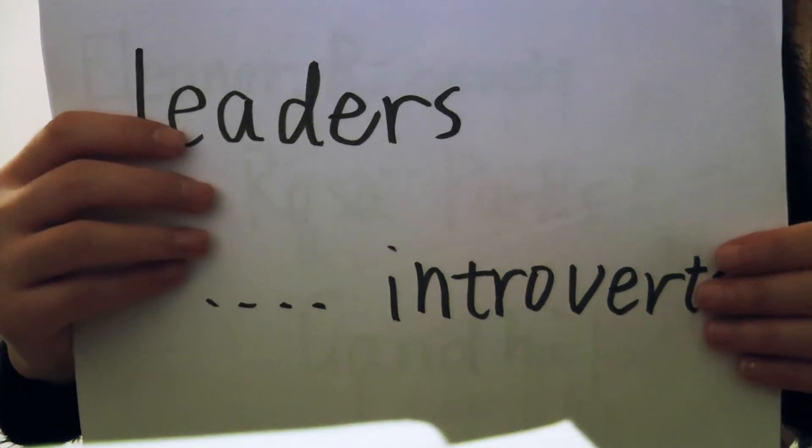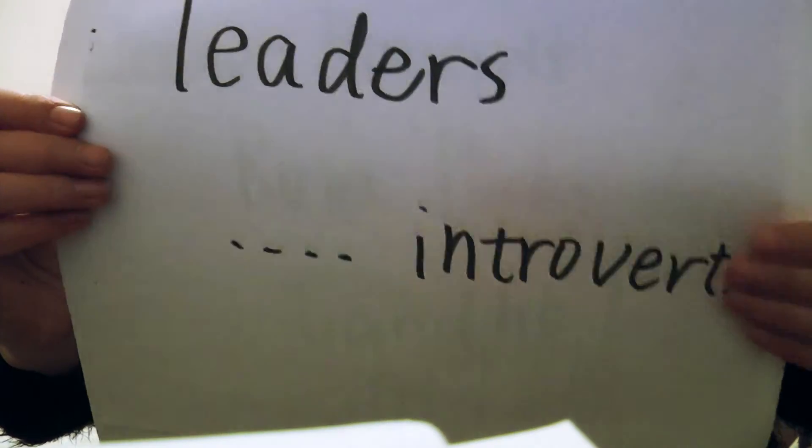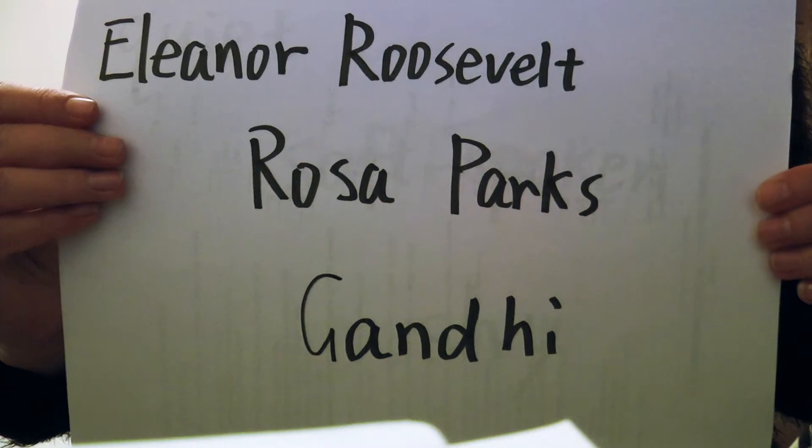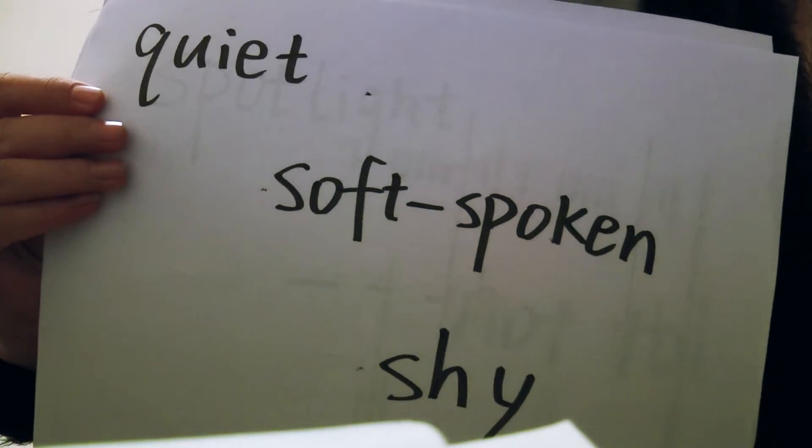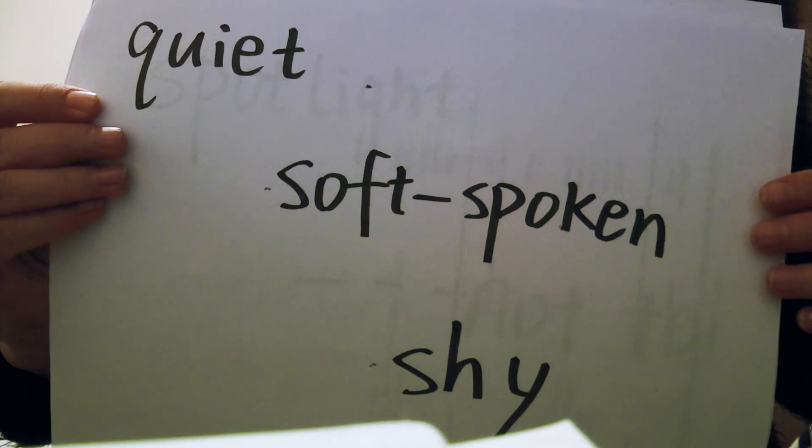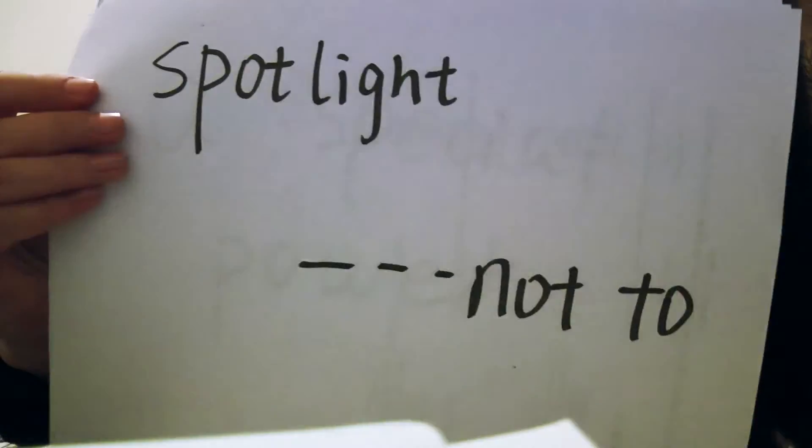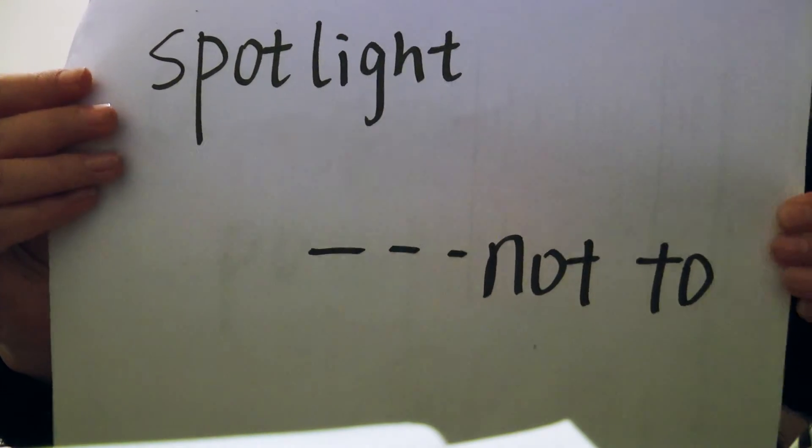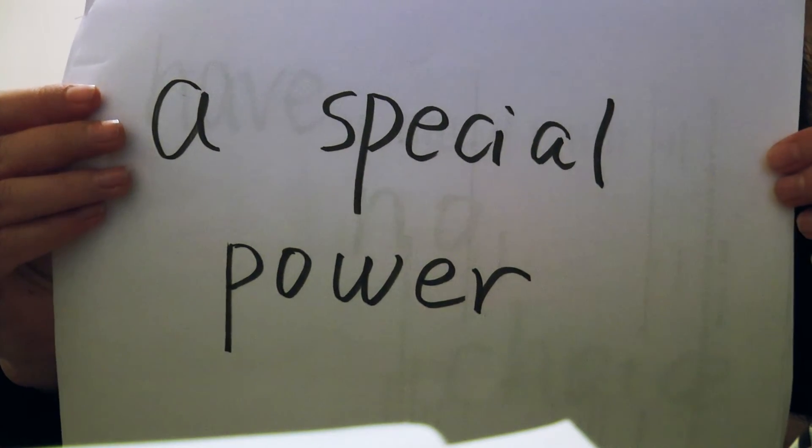In fact, some of our leaders in history have been introverts. For example, Eleanor Roosevelt, Rosa Parks, Gandhi. All these people described themselves as quiet and soft-spoken and even shy. And yet they took the spotlight. Even though everything in their bodies was telling them not to. And this turns out to have a special power all its own.